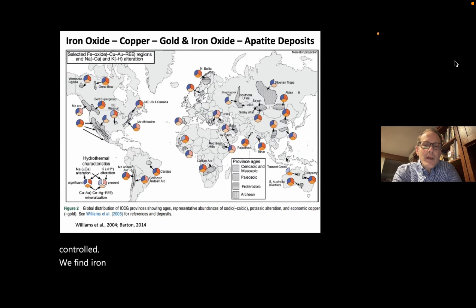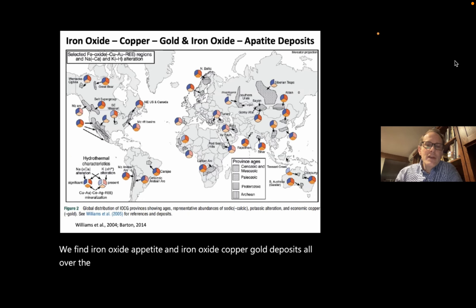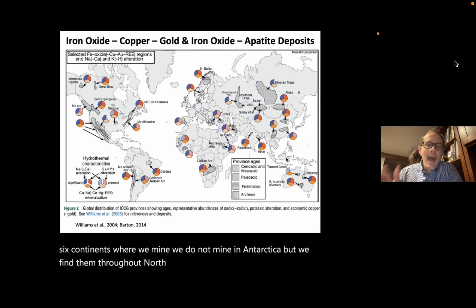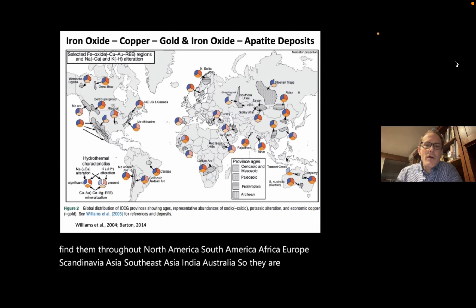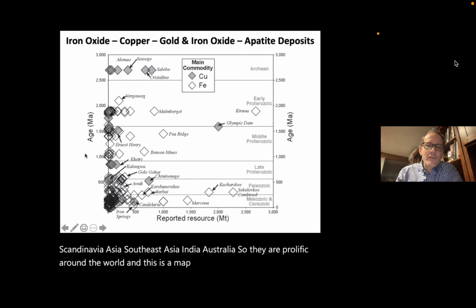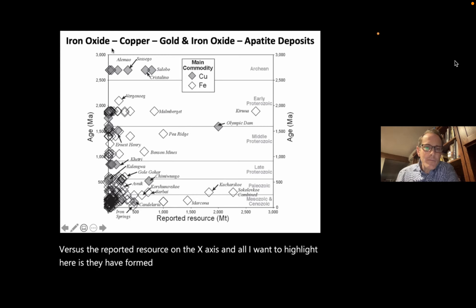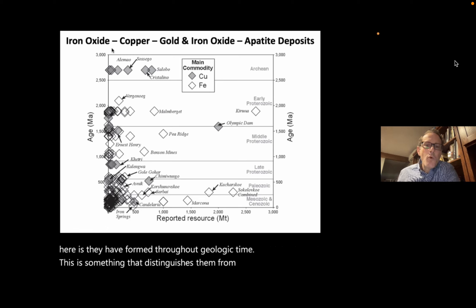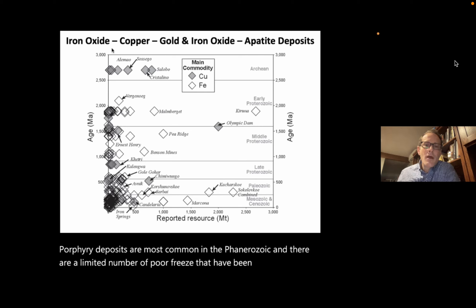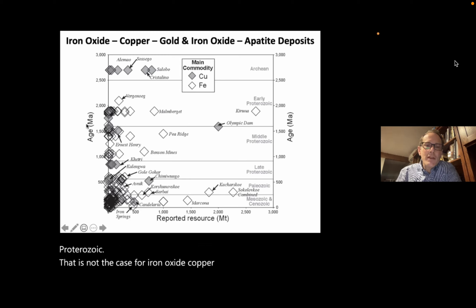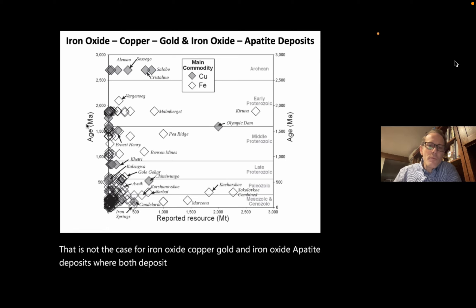We find iron oxide apatite and iron oxide copper gold deposits all over the world — throughout North America, South America, Africa, Europe, Scandinavia, Asia, Southeast Asia, India, and Australia. They are prolific worldwide. This map plots age on the y-axis versus reported resource on the x-axis, and all I want to highlight is they have formed throughout geologic time. This distinguishes them from porphyry deposits, which are most common in the Phanerozoic. Both IOA and IOCG deposit types formed in geologic environments both prior to and after the great oxidation event.